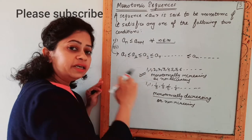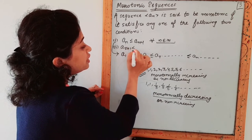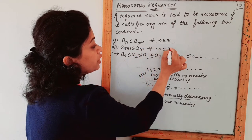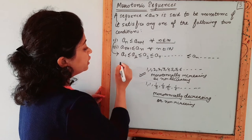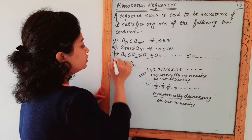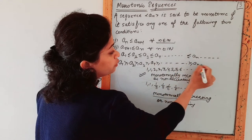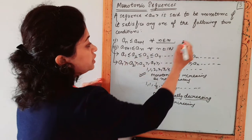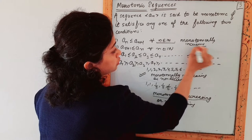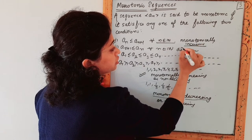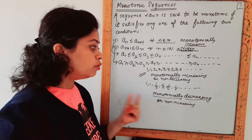So if a sequence follows this pattern, it is monotonically increasing. The second condition: an+1 ≤ an for all n ∈ ℕ, meaning a1 ≥ a2 ≥ a3 ≥ a4 ≥ ... ≥ an — every next member is smaller than or equal to the previous. This is monotonically decreasing. Monotonically increasing is also called non-decreasing, and monotonically decreasing is also called non-increasing.